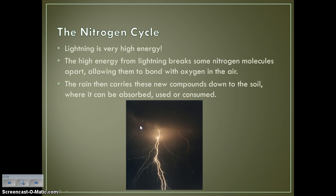Lightning is very high in energy. The high energy from lightning can actually break apart some of those nitrogen molecules existing in the atmosphere, allowing them to bond with the oxygen in the air, making them a usable form. The two nitrogen atoms that were bonded together get split apart by the high-energy lightning. They can then bond with things like oxygen, and those new compounds get carried down to the soil by rain, where they can be absorbed by plants or consumed. So lightning is very important in the nitrogen cycle.